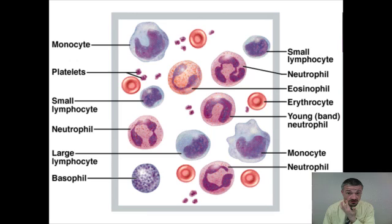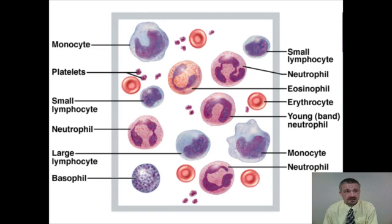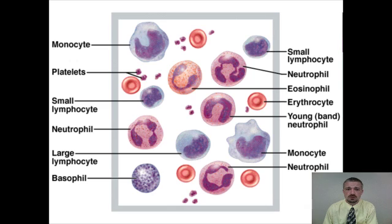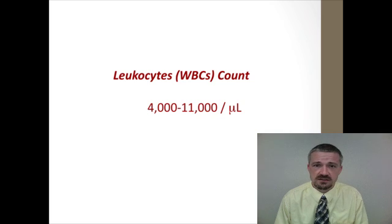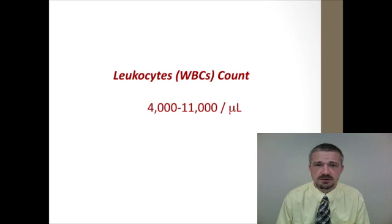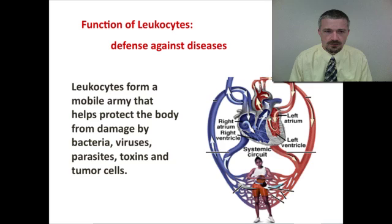This slide shows a cartoon version of the different blood cells. You can see the different white blood cells have different colors as well as shapes of their nucleus. The standard count for leukocytes is about 4,000 to 11,000 — some books say 5,000 to 10,000 — per microliter. The main function of leukocytes is to provide protection to the body.